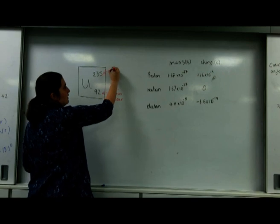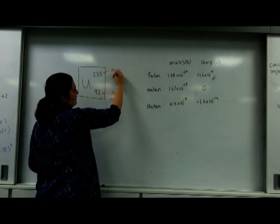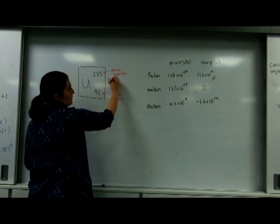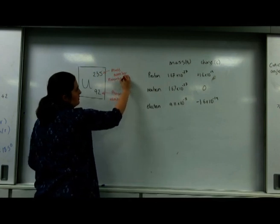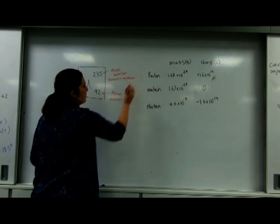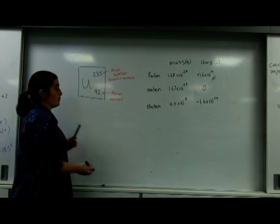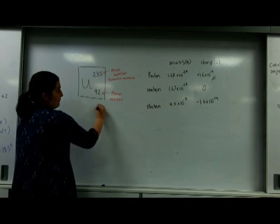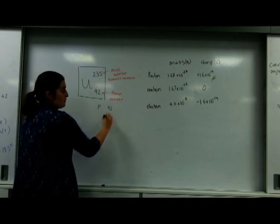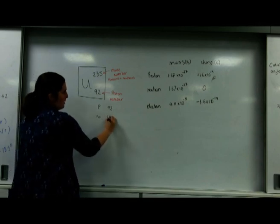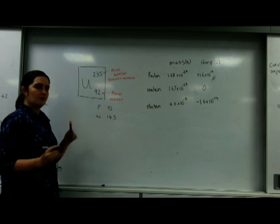This is the mass number. This is how many protons and neutrons I have. So in this case, this atom of uranium-235, I have 92 protons.